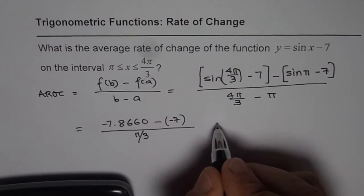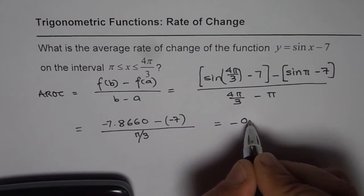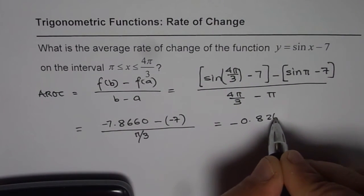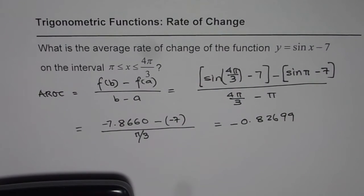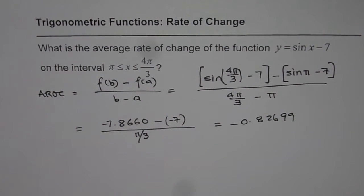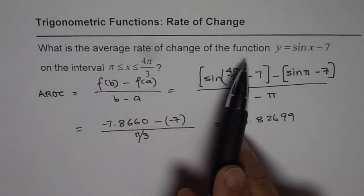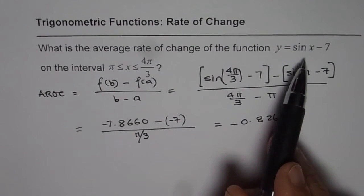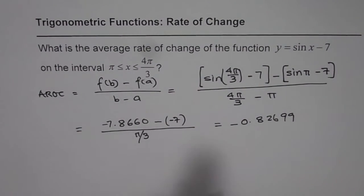We will times it by 3 and then divide it by pi to calculate the answer. That gives us the value of minus 0.82699. That is the average rate of change for this particular function on the given interval.